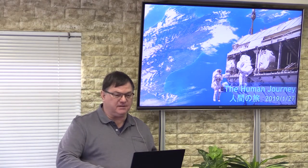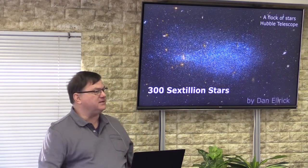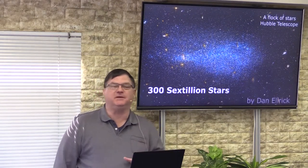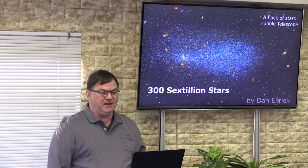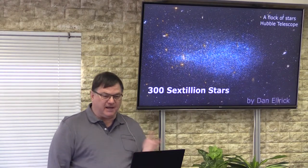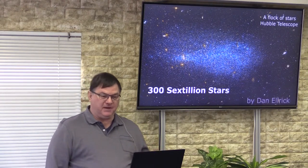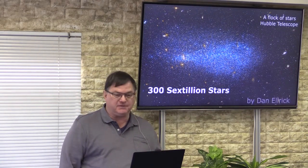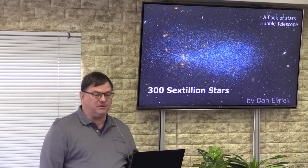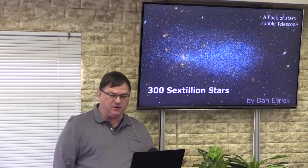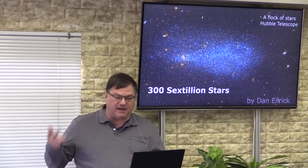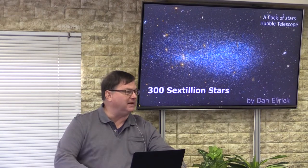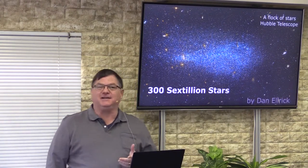Today's message in this series is called 300 Sextillion Stars. Sextillion comes after quintillion, which comes after quadrillion, and then we get back to trillion. You can always remember: it's a million, a billion, a trillion, a quadrillion, a quintillion, a sextillion, a septillion, an octillion, a nonillion, and a decillion. Those are really handy words to know and drop into everyday conversation and confuse people.